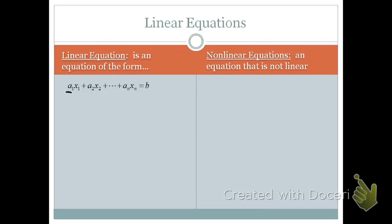Where a1, a2, and an are called our coefficients and x1, x2, and xn are called our unknowns.